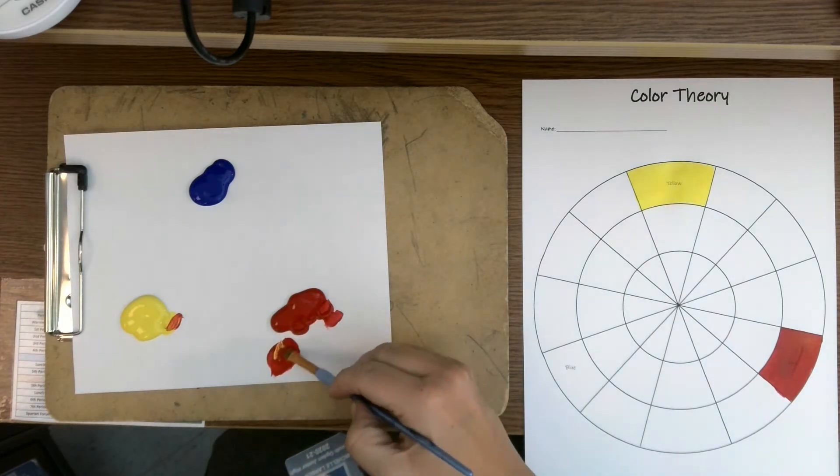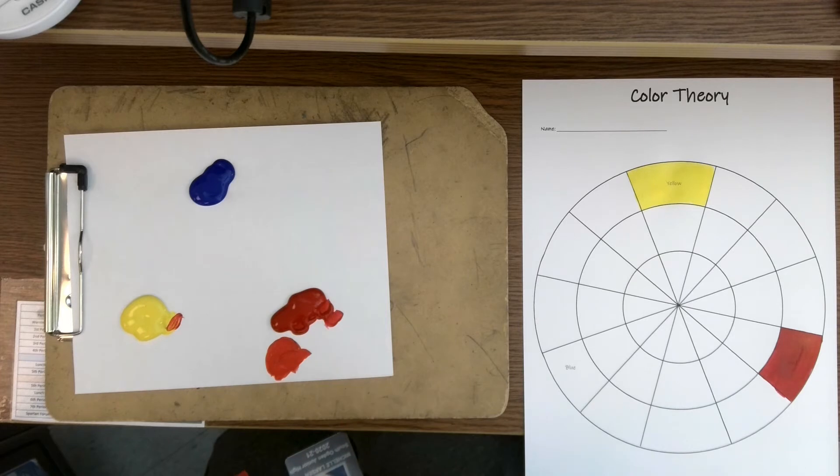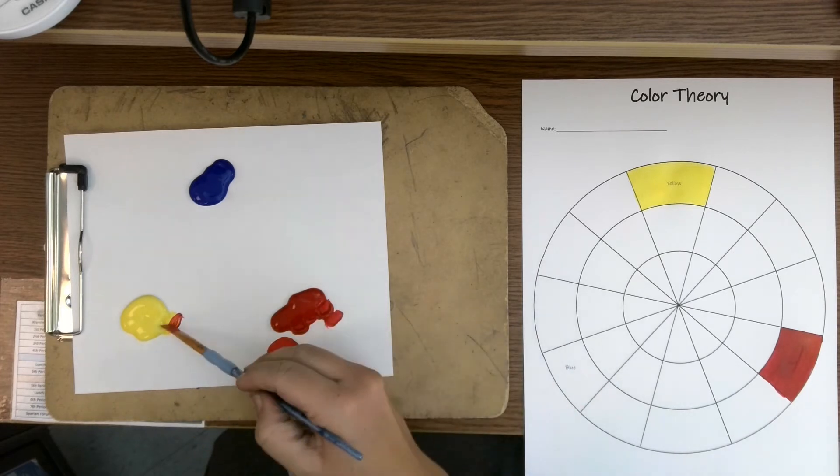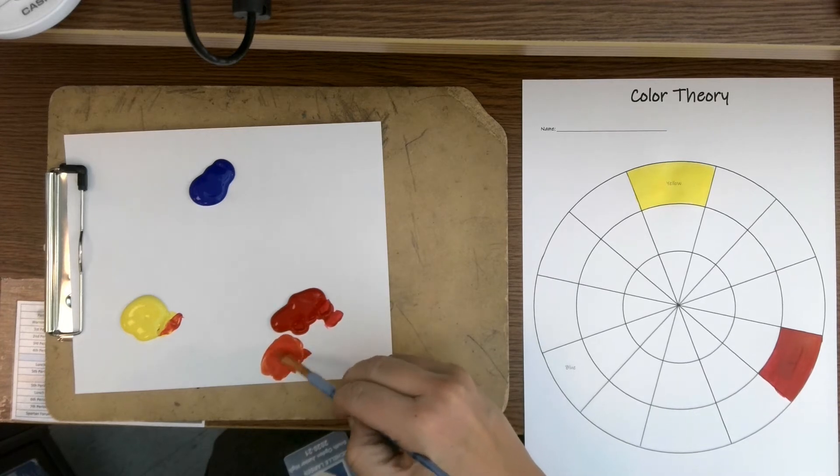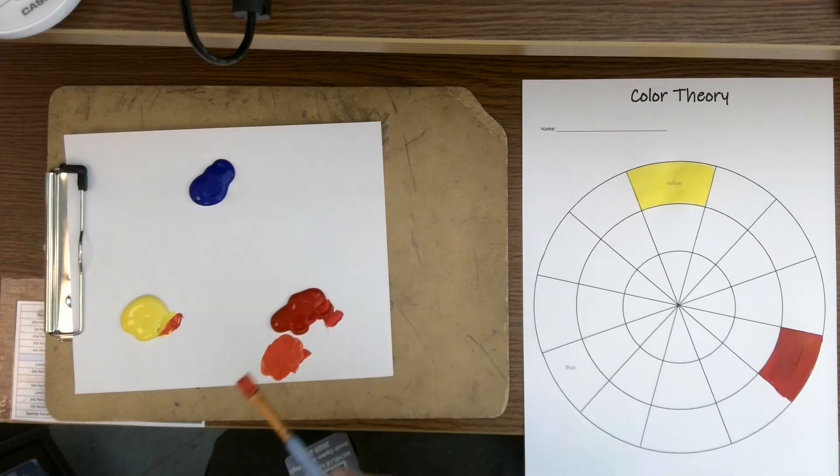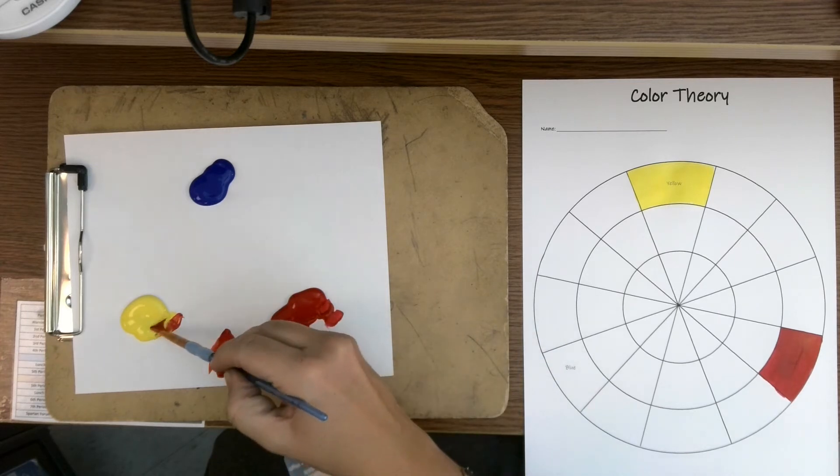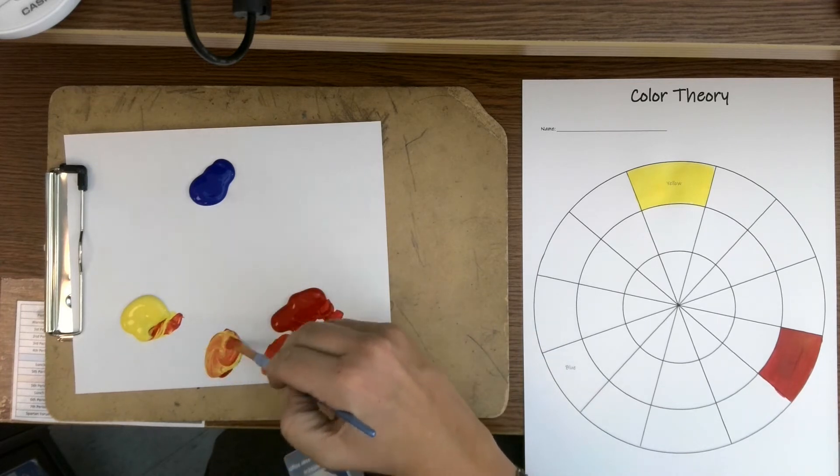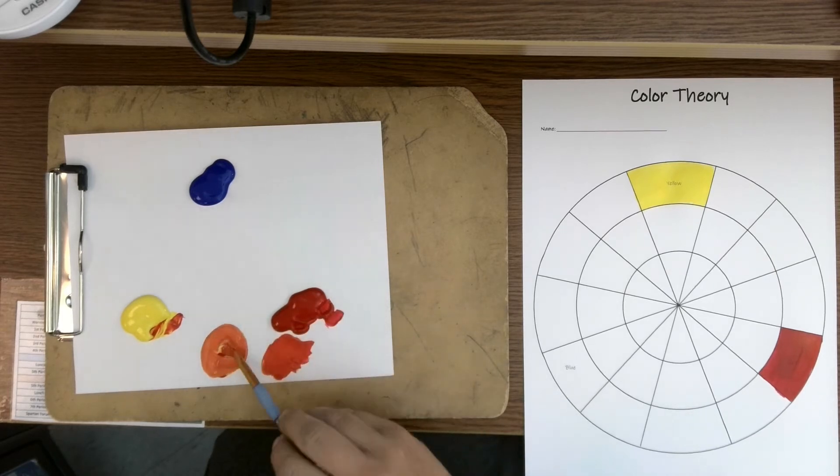And some yellow. Now the thing about red and yellow is that yellow is much easily overpowered by red. So I only added a little bit of yellow but I'm not really getting much difference there. So I'm going to add some more and I want it to look distinctly different from my red. Okay, so I think that looks pretty good for my red-orange. Now I'm going to make a mixture of the two.